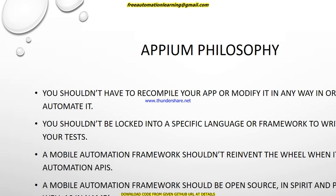I used Calabash previously. In Calabash, we have to recompile our application and embed test servers through which we run automation — it is also an open source mobile automation tool. But with Appium we do not need to recompile. Second philosophy: you should not be locked into a specific framework or language. Appium supports Java, Ruby, Perl, and JavaScript.